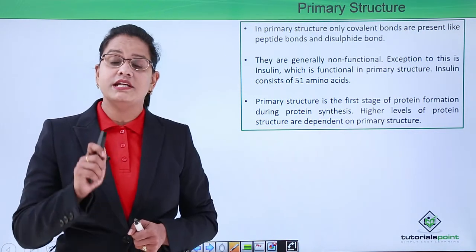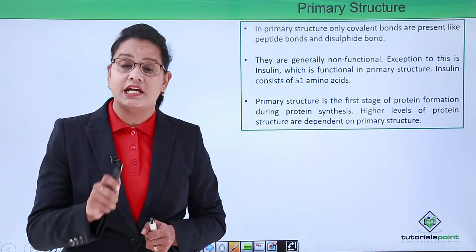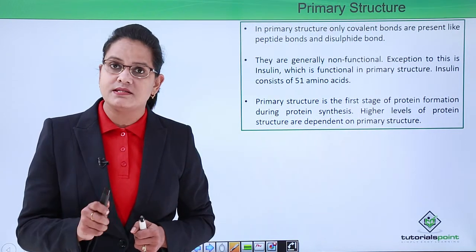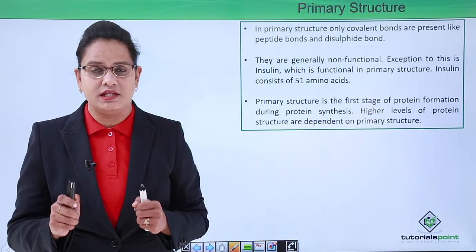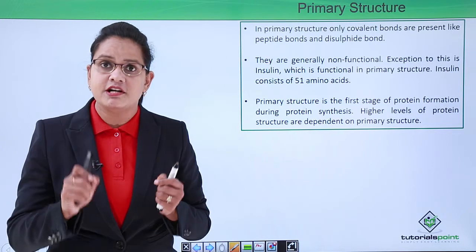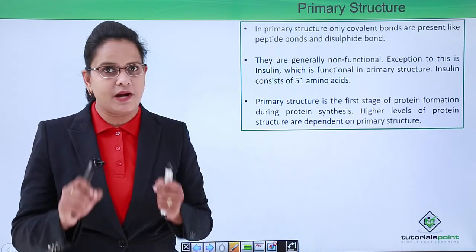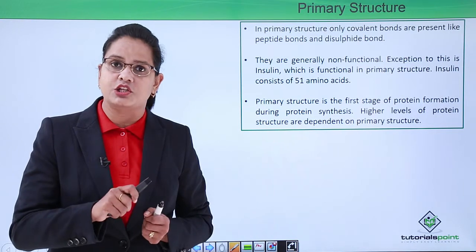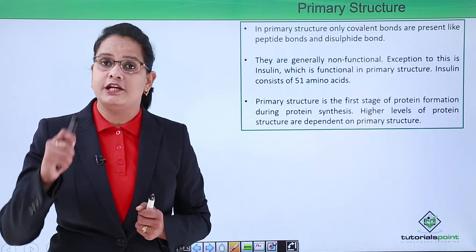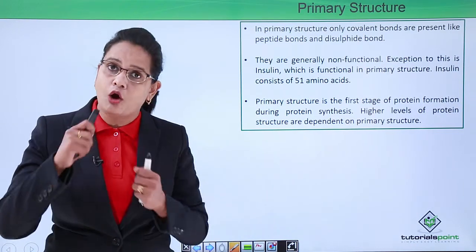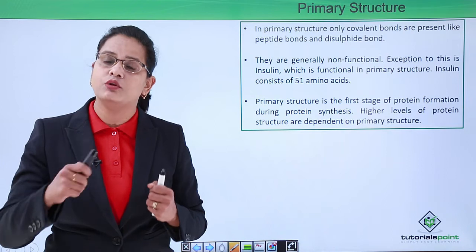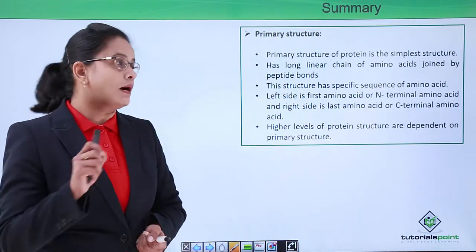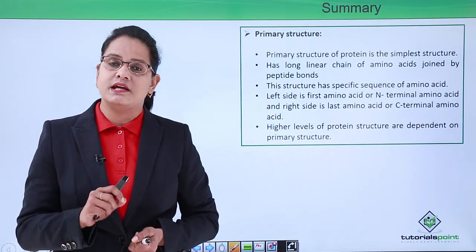The primary structure is the first stage of protein formation. When protein synthesis occurs inside the nucleus, the first structure formed is the primary structure, and it is this primary structure which determines how the protein will fold and how the higher levels of structures will be formed.